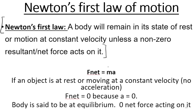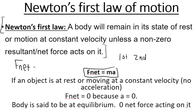F_net equals ma — we technically should start all Newton's law questions, first and second law, like this. But remember, F_net equals zero if we're dealing with a Newton's first law question. The reason F_net equals zero is because acceleration is zero. The object is either not moving, so acceleration is zero, or it's moving at a constant velocity, which also means acceleration is zero. So the body is in equilibrium and there is zero net force acting on it.